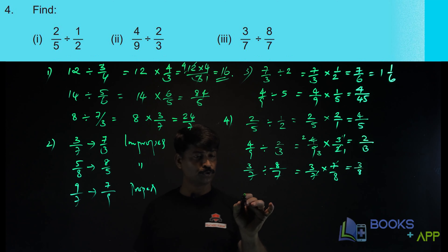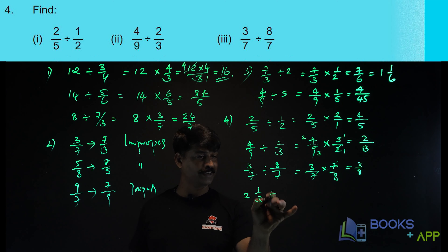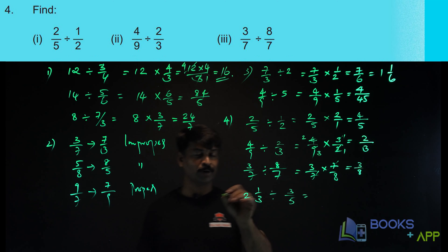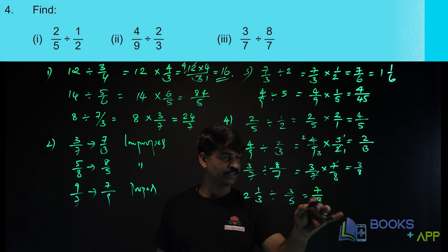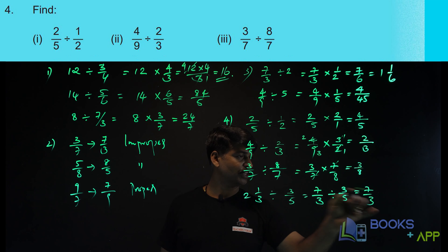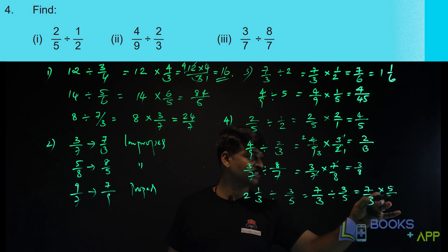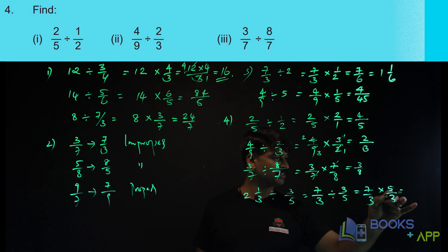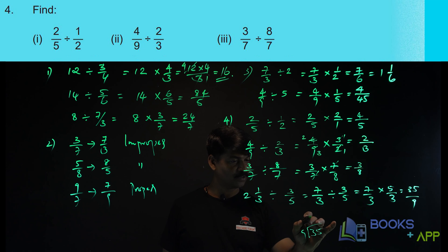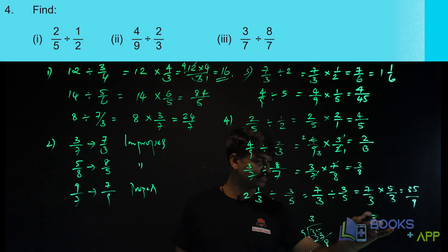Now let us solve one more: 2 and 1 by 3 divided by 3 by 5. First convert the mixed number — 3 twos are 6, 6 plus 1 is 7, so it is 7 by 3 divided by 3 by 5. That is equal to 7 by 3 into 5 by 3 — take the reciprocal and multiply. So the answer is 7 fives are 35 by 9. Dividing, 3 sevens are 27, remainder 8, so this equals 3 and 8 by 9.